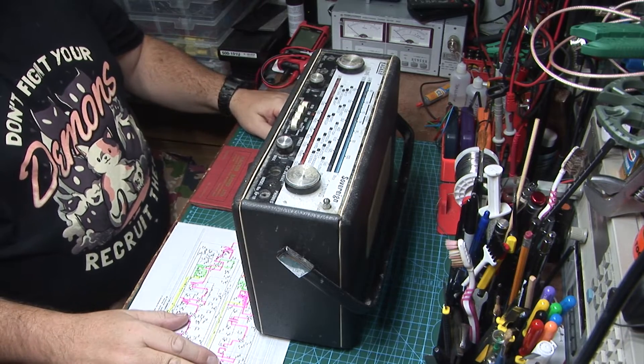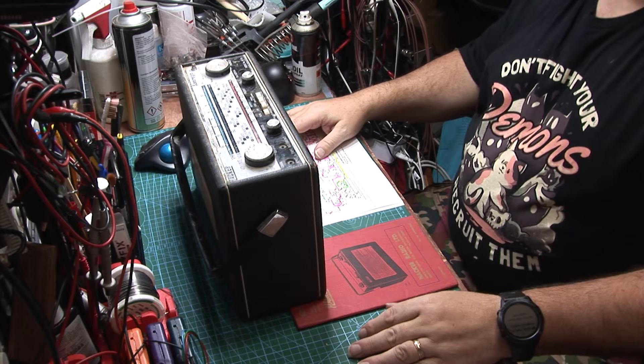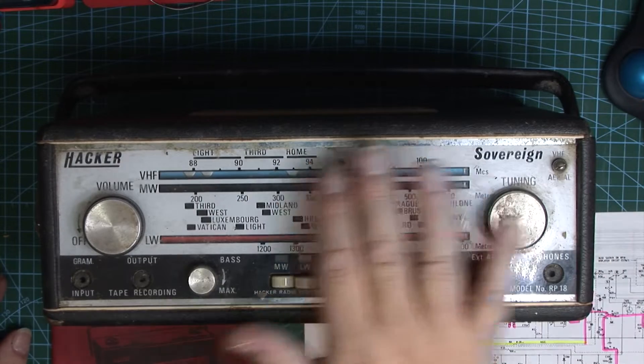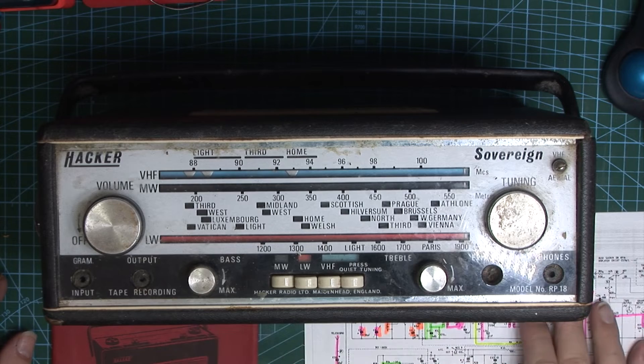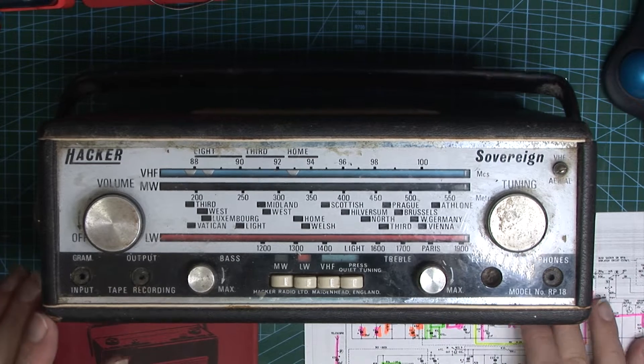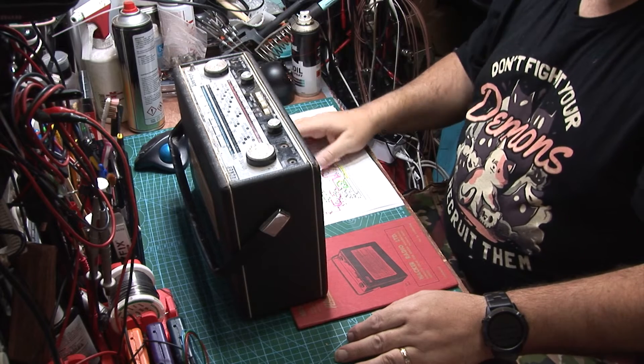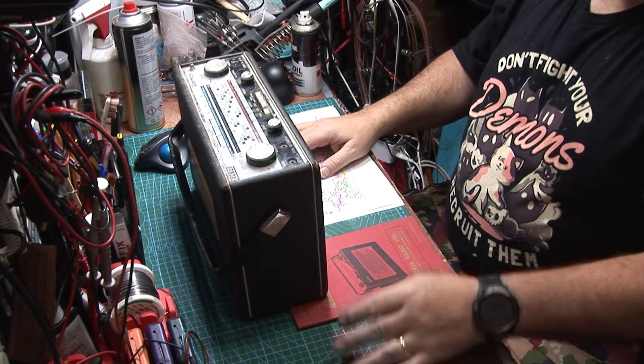This one came from either Goldborn or eBay, I can't remember, but either way, it's a bit of a dirty girl. There's lots of crustiness on the top panel, on the dial face. There's some chips out of the Rexene padding, and it isn't padded at all. There's some dents in the front of the grille.